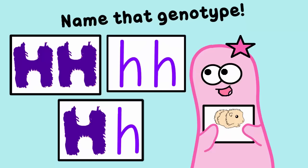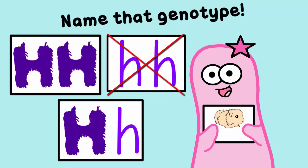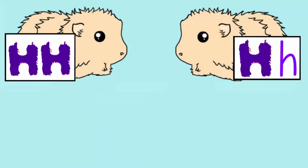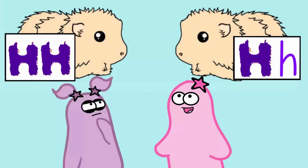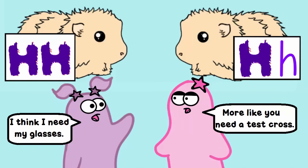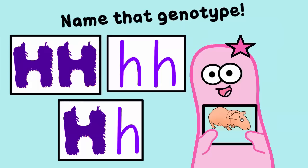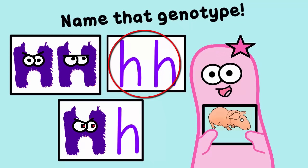If I were to show you a guinea pig with hair, would you know its genotype? Well, you'd know it's not lowercase h, lowercase h, because if it were, it would be hairless. But a guinea pig with hair could be capital H, capital H, or capital H, lowercase h — we don't really know. We could do a test cross to determine this, but you can't tell just by looking. Now, if we had a hairless guinea pig, we do know for sure it's lowercase h, lowercase h, because if it had even one capital letter, that dominating allele would take over and it would have hair.